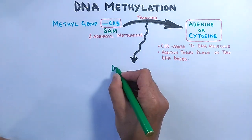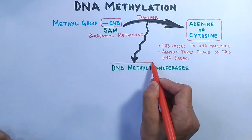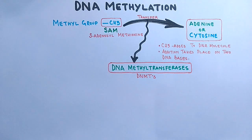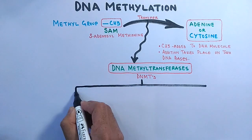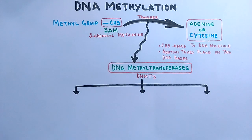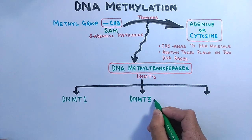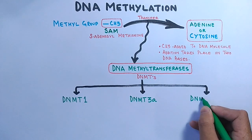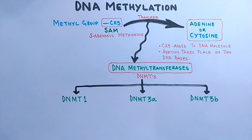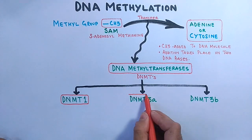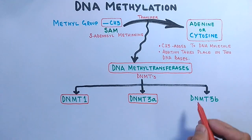The transfer of the methyl group is mediated by an enzyme called DNA methyltransferases, or DNMTs for short. These DNMTs are of three types: DNMT1, DNMT3a, and DNMT3b.